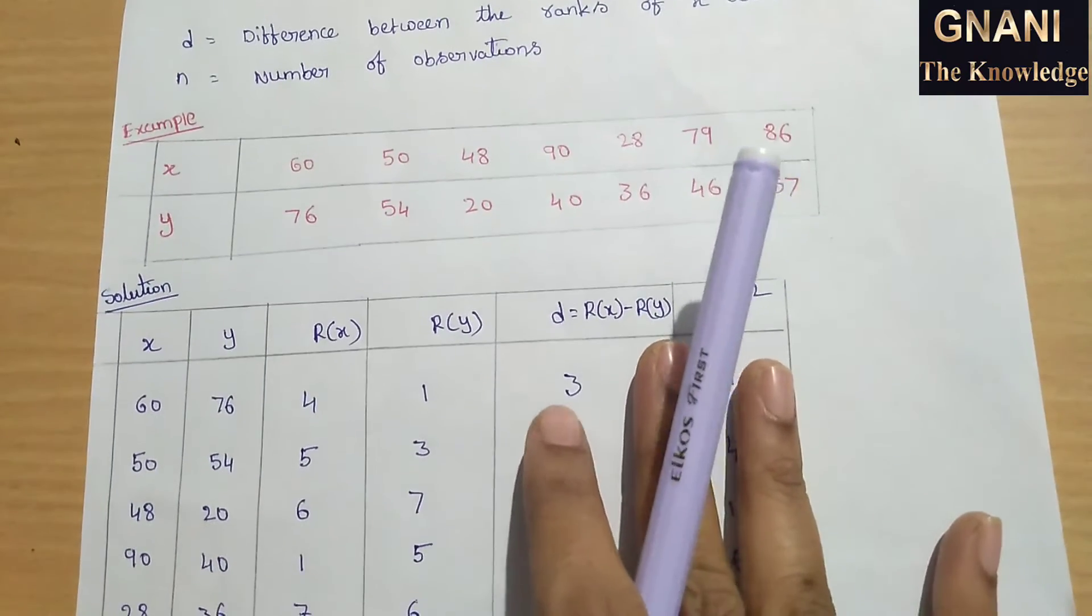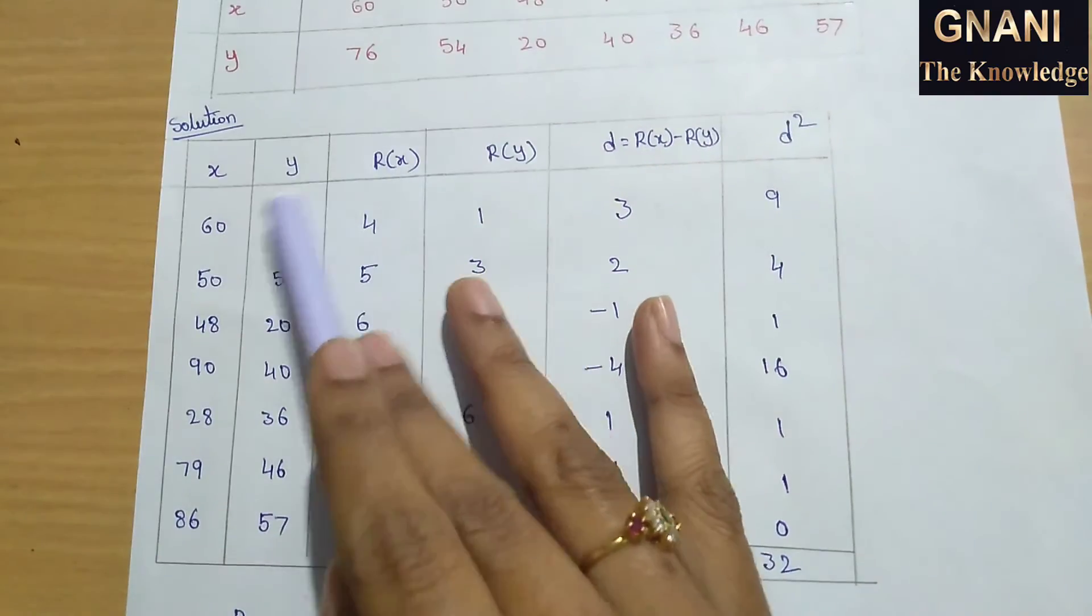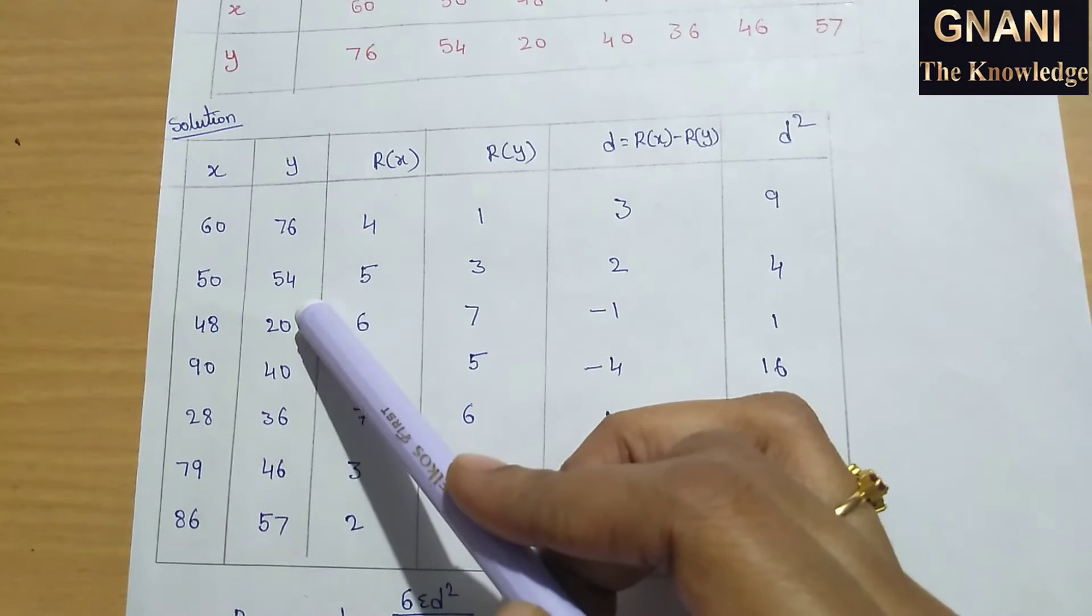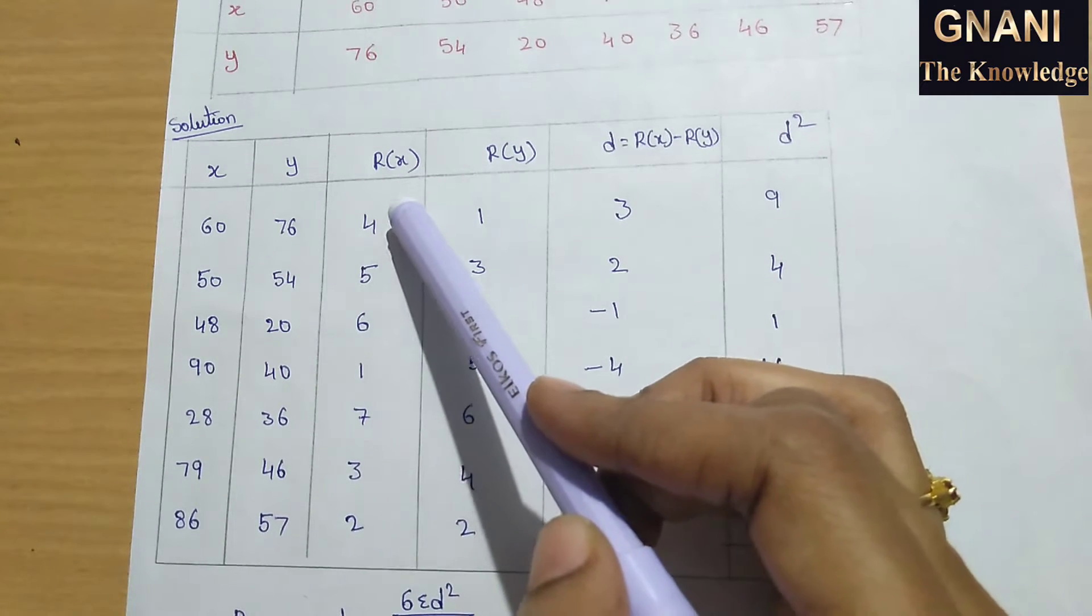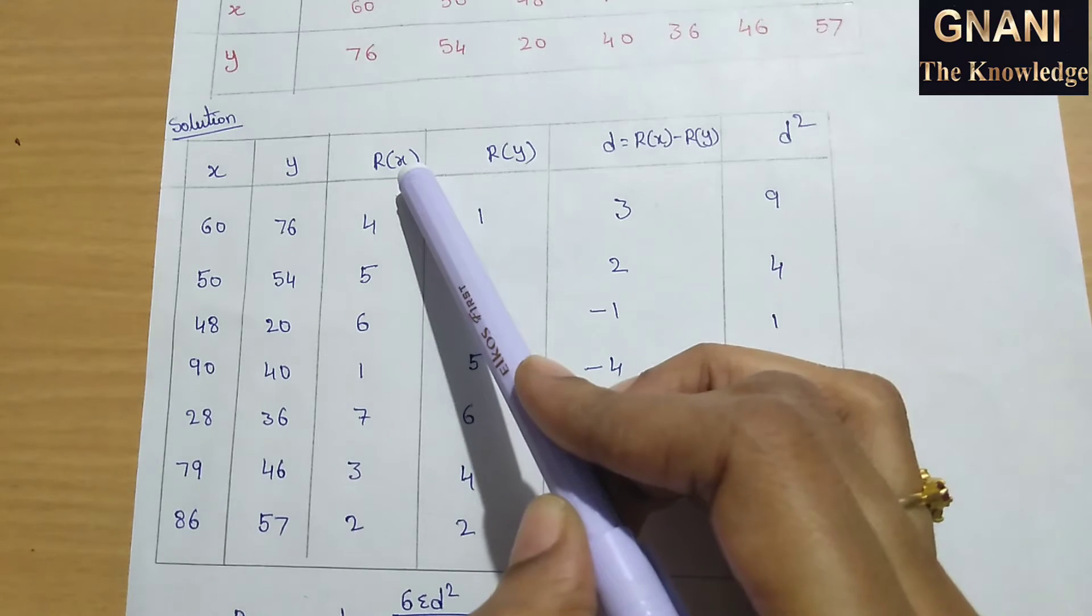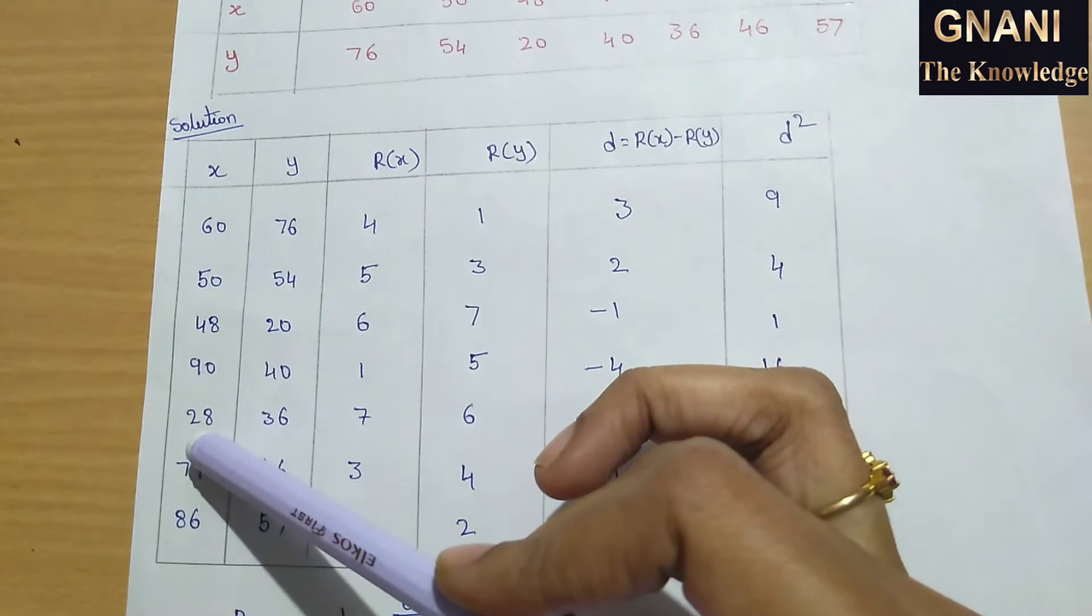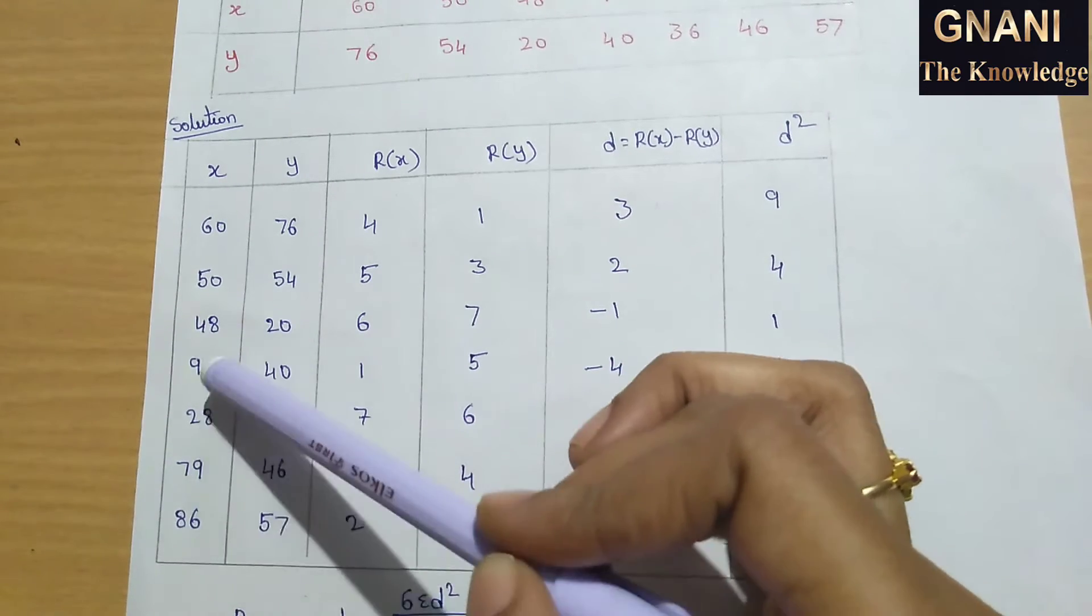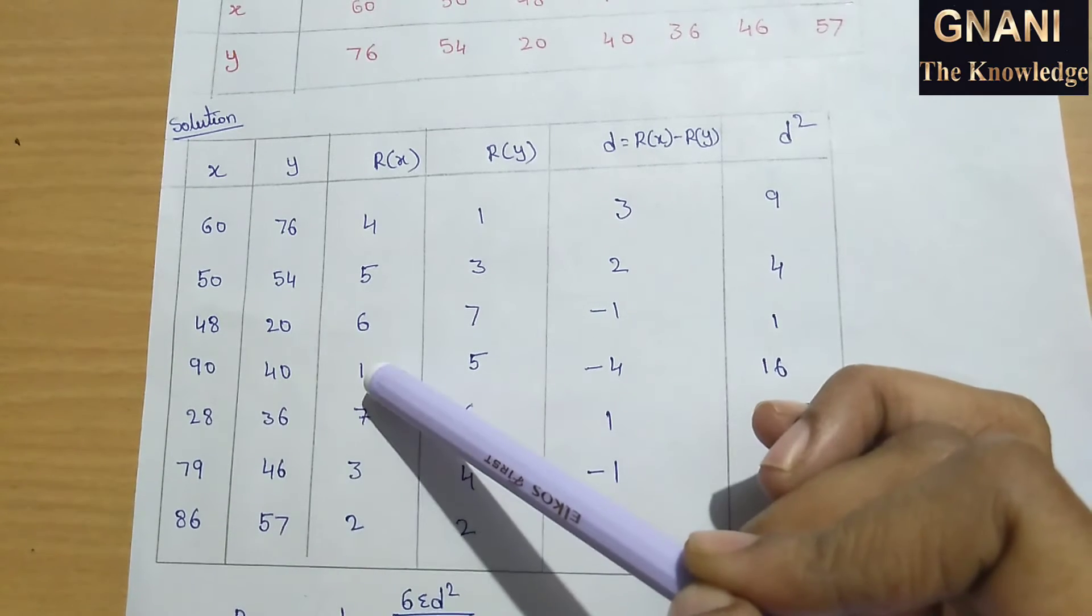First we have to calculate the ranks of the x series. This is an easy method - in the x series, find the maximum value. Here, the maximum value in x series is 90, and 90 gets first rank.